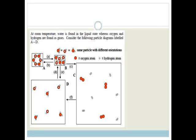It says, at room temperature, water is found in a liquid state, whereas oxygen and hydrogen are found as gases. Consider the following particle diagrams labeled A through to D.